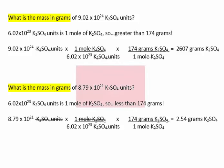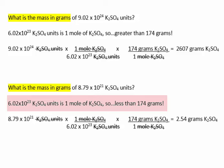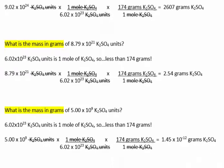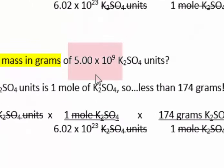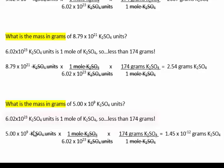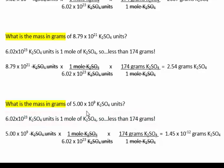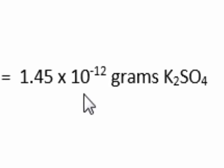In the next example, we're given a number less than 1 mole — 8.79 times 10 to the 21st potassium sulfate units — so we would anticipate our answer to be less than 174 grams, unlike the previous problem where we were given a number greater than a mole and anticipated an answer greater than 174 grams. What if we had a quantity of potassium sulfate units that was much, much smaller — 5 times 10 to the 9th, or 5 billion? We proceed in the same fashion, anticipating a gram quantity less than 174 grams, giving 1.45 times 10 to the minus 12th grams.